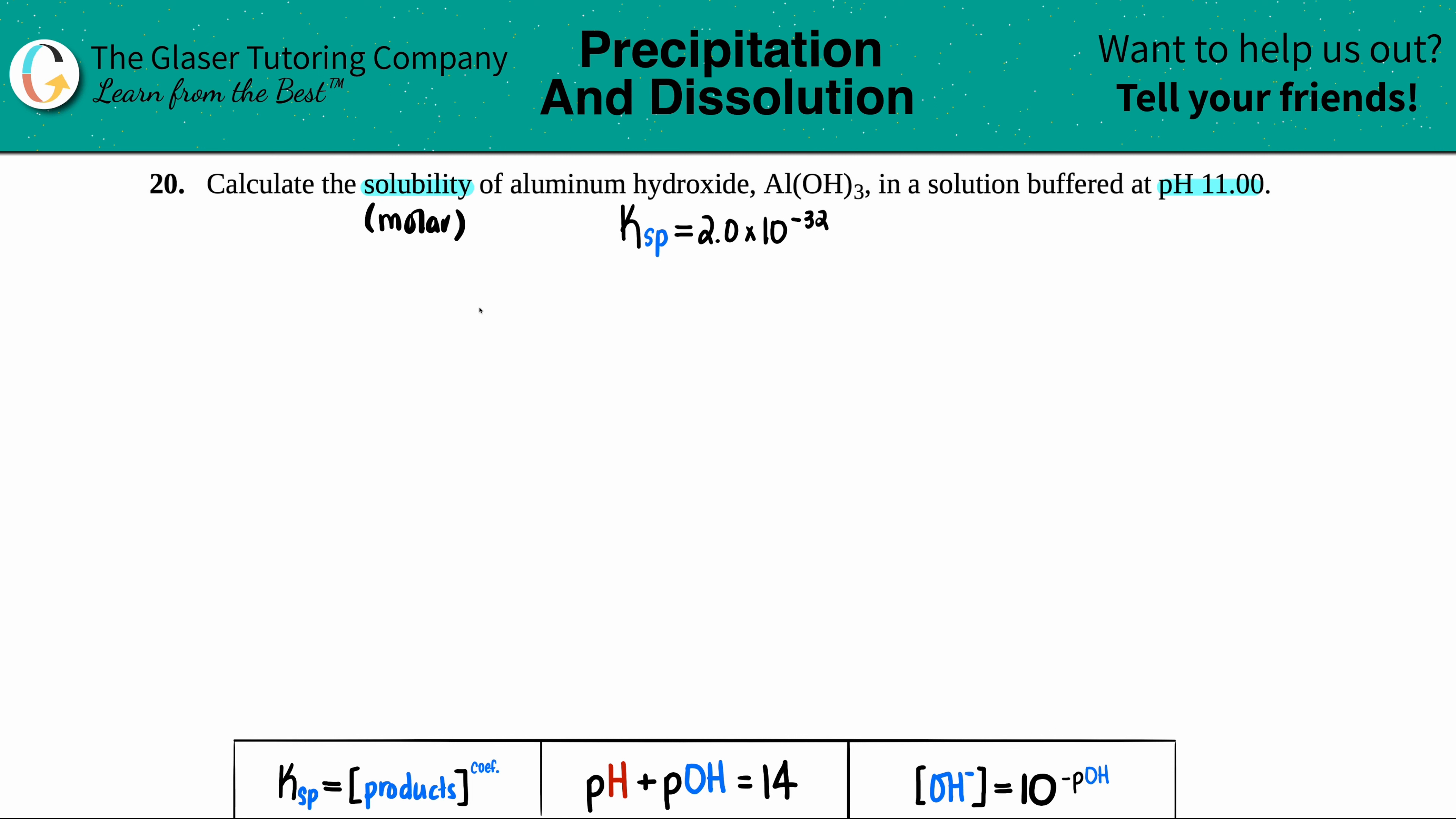When we're looking for molar solubility, that always comes from the Ksp value. I had to look in the back of a textbook to find the solubility product of aluminum hydroxide, which is 2.0×10⁻³². In order to use the Ksp, we first have to write a balanced equation showing that aluminum hydroxide dissolves into its ions. Molar solubility is basically the amount that's going to dissolve in a saturated solution.